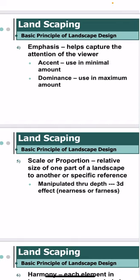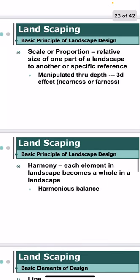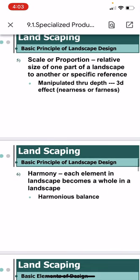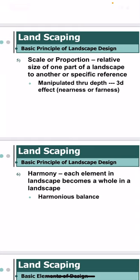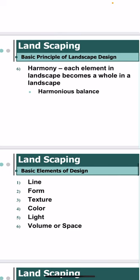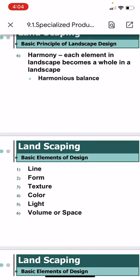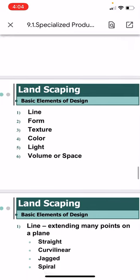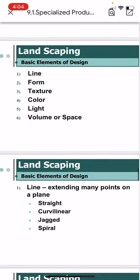The fourth principle is emphasis, which helps capture the attention of the viewer — it includes accent used in minimal amounts and dominance used in maximum amounts. Fifth is scale or proportion, the relative size of one part of a landscape to another, manipulated through depth and 3D effect to give the sense of nearness or farness. Sixth is harmony, where each element in the landscape becomes a whole — a harmonious balance.